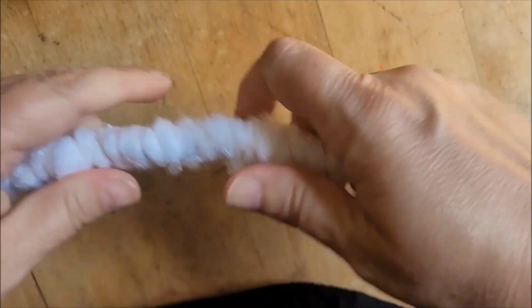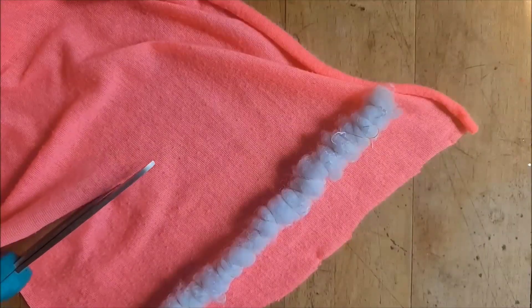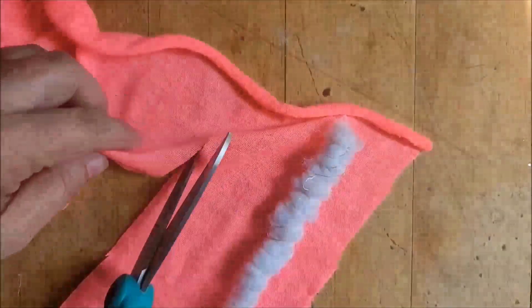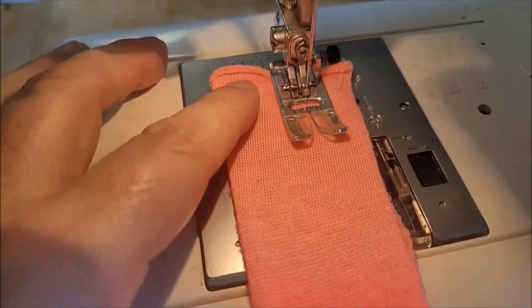Cut fabric for the outside of your worm. I'm using a knit scarf that I picked up at a thrift shop. You'll want to cut a piece big enough to wrap around your fuzzy stick, adding to the width and length to allow for a seam allowance.